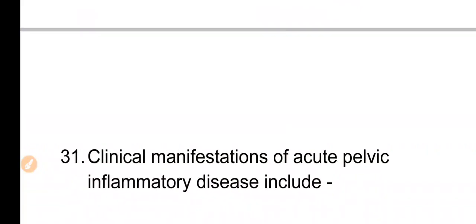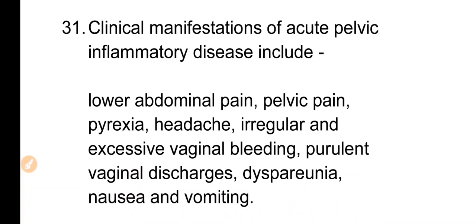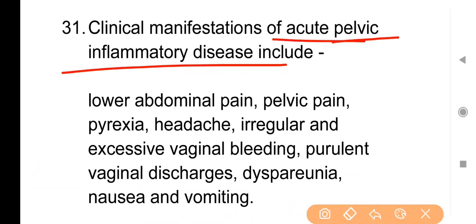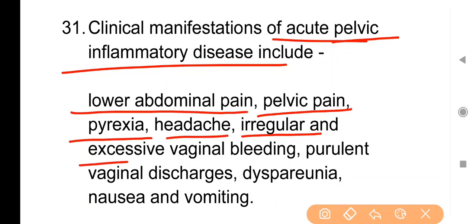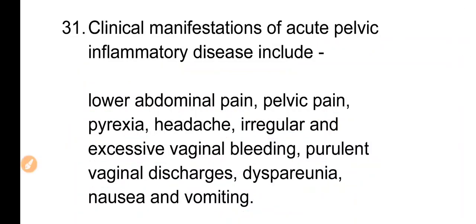Point No. 31: Clinical manifestations of acute pelvic inflammatory disease include: lower abdominal pain, pelvic pain, pyrexia, headache, irregular and excessive vaginal bleeding, purulent vaginal discharge, dyspareunia, nausea, and vomiting। ये सभी findings acute pelvic inflammatory disease के patient में देखने को मिल सकती हैं।